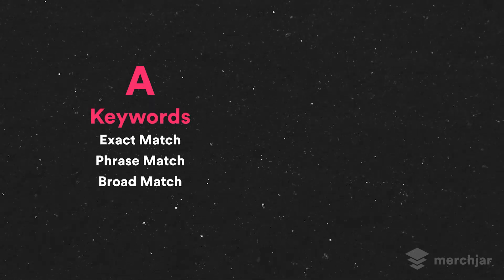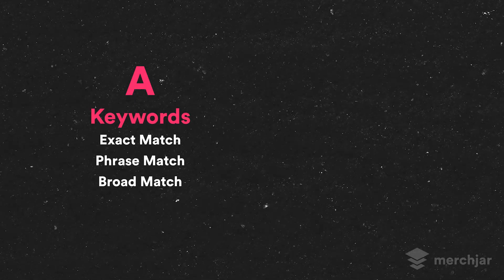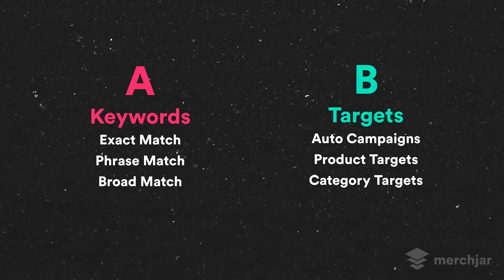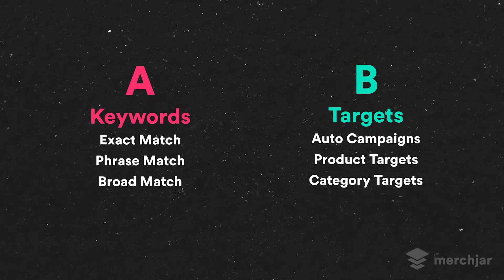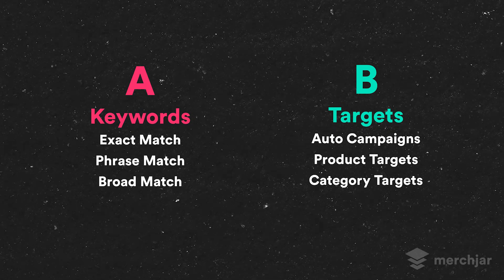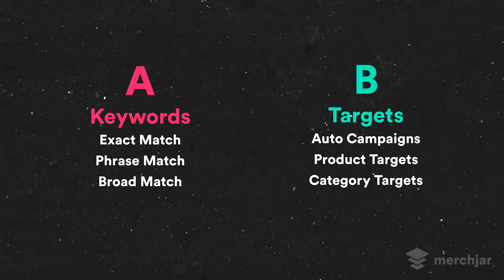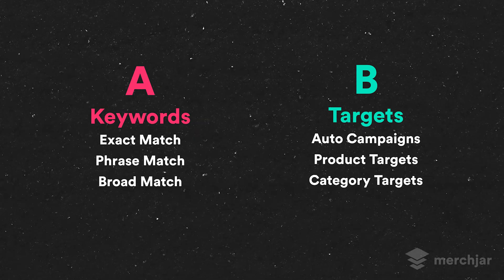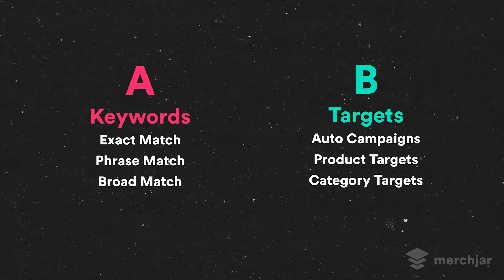Each recipe has two versions: an A version for keywords — your exact, phrase, and broad match keywords in your manual campaigns — and a B version for targets, which covers your automatic campaign targets like loose match or substitutes, and category and product targets in your manual campaigns. Otherwise, each version is exactly the same. If you're only running automatic campaigns, you can download and import just the B versions of each recipe.